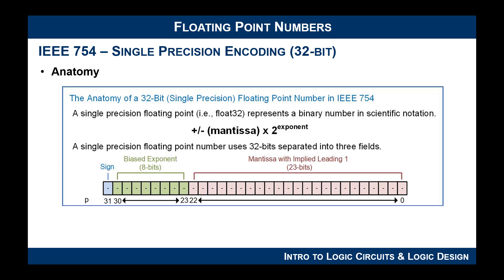There are other formats — there's double precision which uses 64 bits, and there are a couple other encoding techniques — but we always want to start with 32 bits, go through this in depth, and then extend it to the other ones. The anatomy is that you take a floating point number and represent it in base-2 scientific notation, which uses three specific dedicated fields.